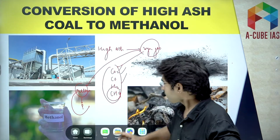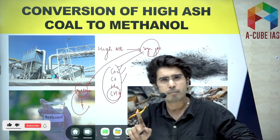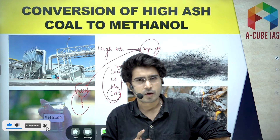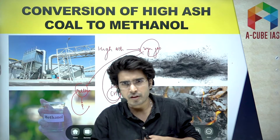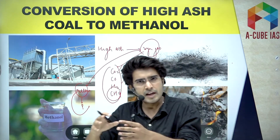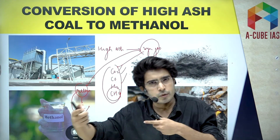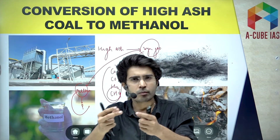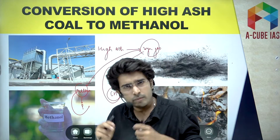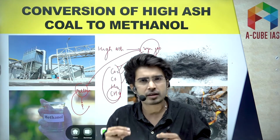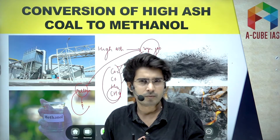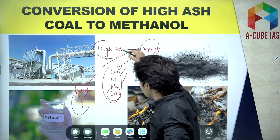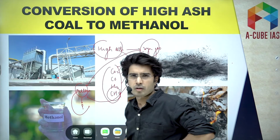This technology has been developed by BHEL — Bharat Heavy Electricals Limited. To recap: the high ash content coal is first converted into Syngas, and after that Syngas is converted into Methanol, which is then used as a transportation fuel. This is the entire process of converting high ash content coal to Methanol.